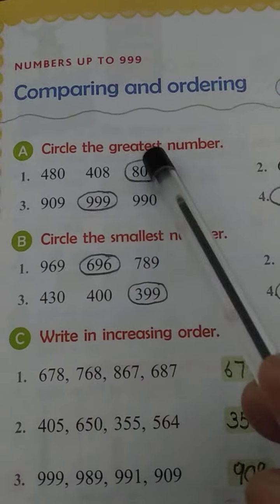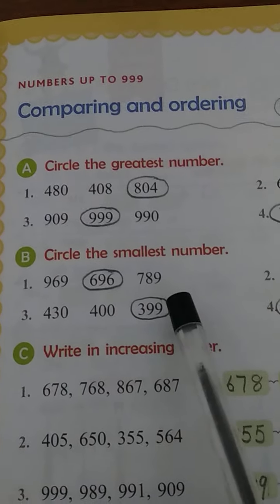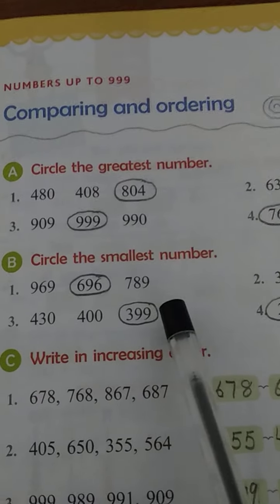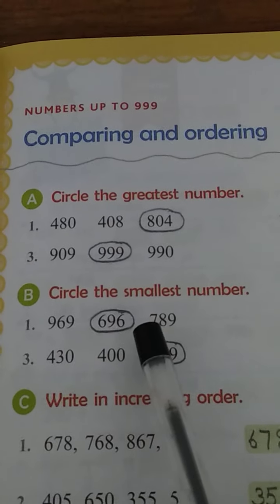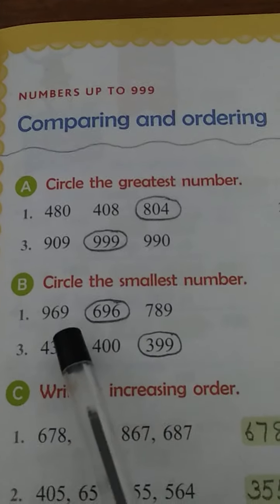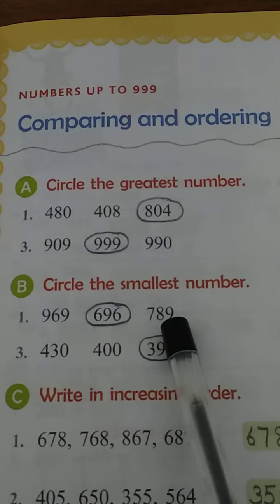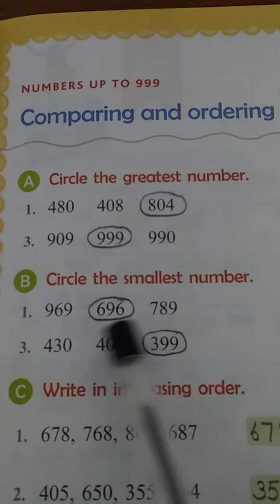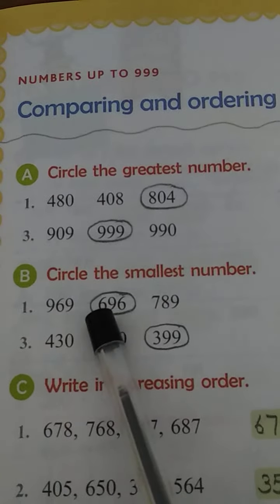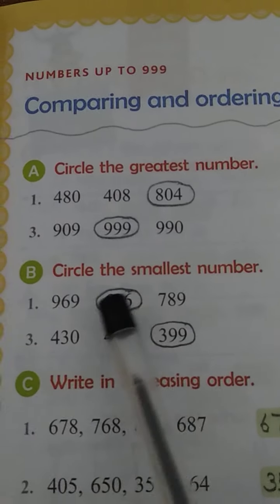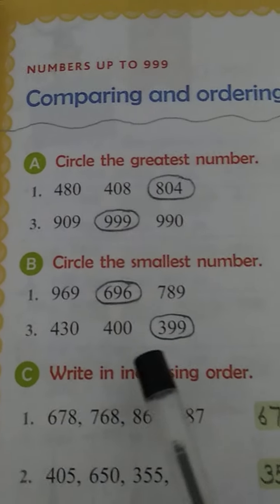So you put a circle on the greatest number. Now in Part B, we have to find the smallest number. The numbers given in example 1 are 969, 696, and 789. Comparing the hundreds place: 9, 6, and 7. Since 6 is the smallest digit, 696 is the smallest number.